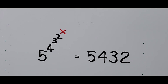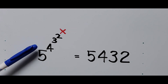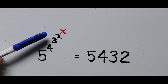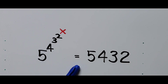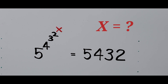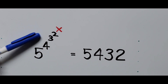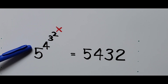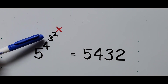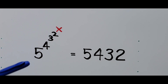Hello everyone, we have an exponential equation with a nested exponent: 5 to the power of 4 to the power of 3 to the power of 2 to the power of x, equals 5,432. In this video we'll be solving for the value of x. Notice that the constant 5, 4, 3, 2 is the same as the nested exponent — power 4, power 3, power 2 — with the base 5.